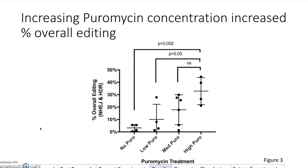What they did in Figure 3 is that they just summarized their findings from Figure 2. They found that increasing puromycin concentration increased percent of overall editing. On the y-axis is percent of overall editing, non-homologous end-joining and HDR. You have your puromycin treatment in abstract terms: no puromycin, low puromycin, medium, and high. What you can see is that in the no puromycin, you basically get no overall editing. As you increase to medium and high puromycin concentrations, you get a larger amount of HDR editing that is occurring.